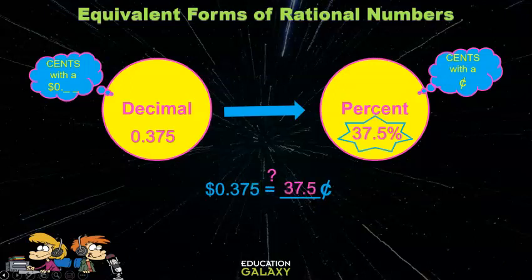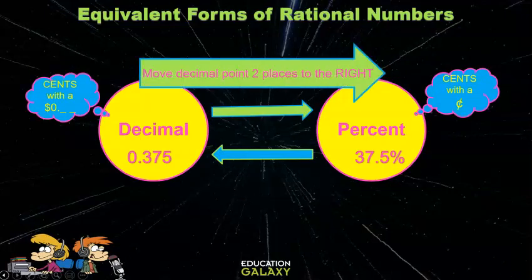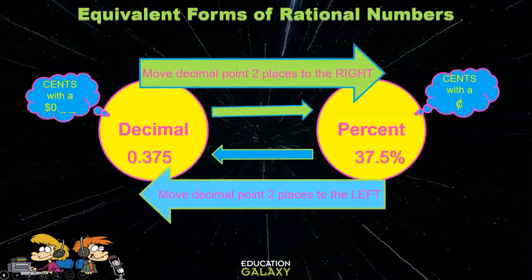Then put a point five for that half a cent. For you guys that like rules, to write a decimal as a percent, you move the decimal point two places to the right, and to write a percent as a decimal, you move the decimal point two places to the left.